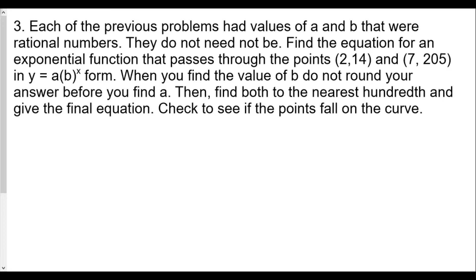Each of the previous problems had values of a and b that were rational numbers. They don't need to be. Find the equation for an exponential function that passes through the points (2,14) and (7,205) in y equals a times b to the x form. When you find the value of b, do not round your answer before you find a. Then find both to the nearest hundredth and give the final equation. Check to see if the points fall on the curve.